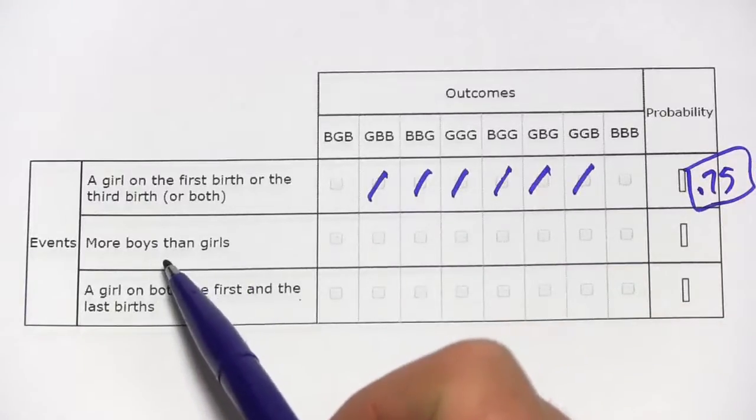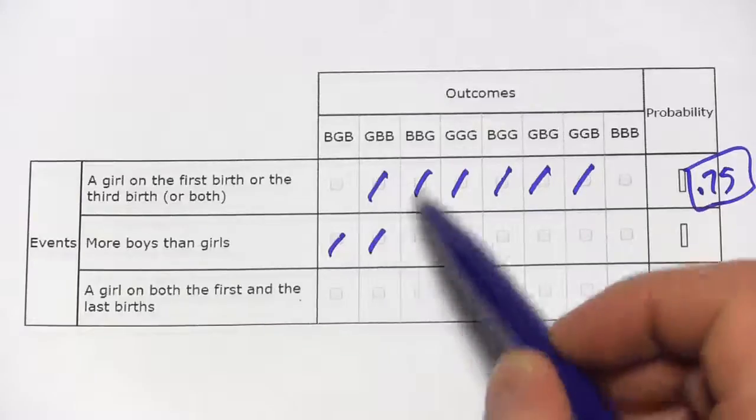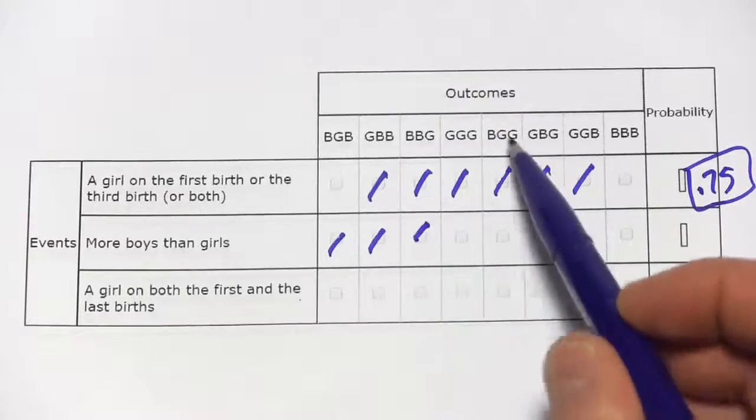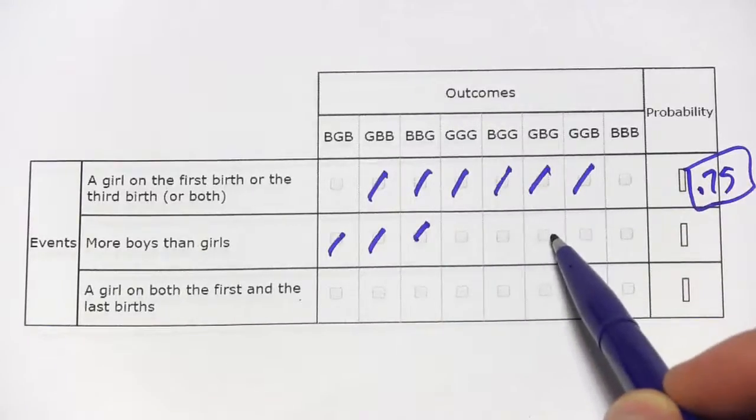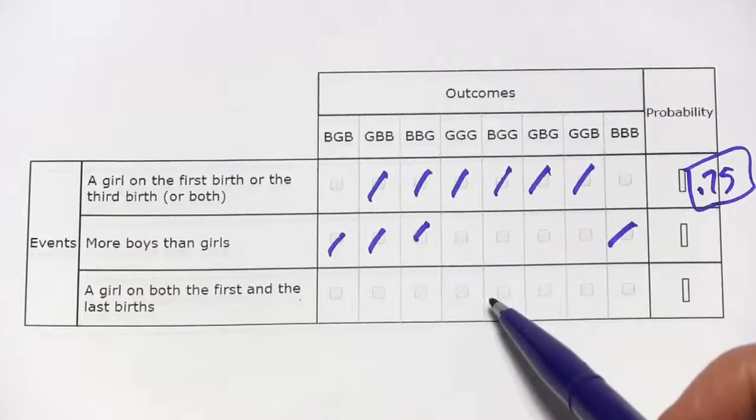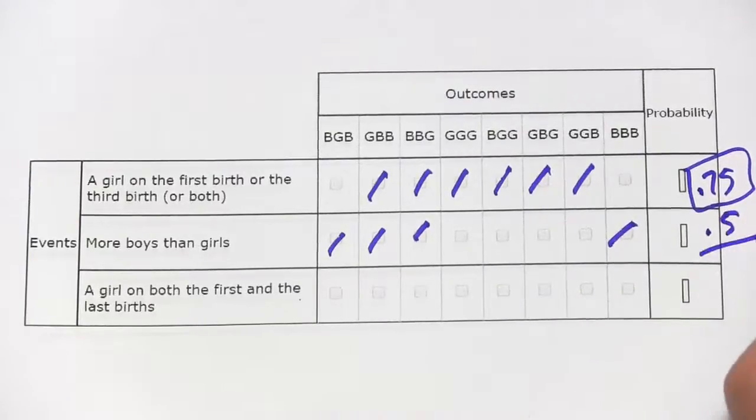The next event is more boys than girls. [Identifying outcomes with two or three boys.] So that one's 0.5, four out of eight.